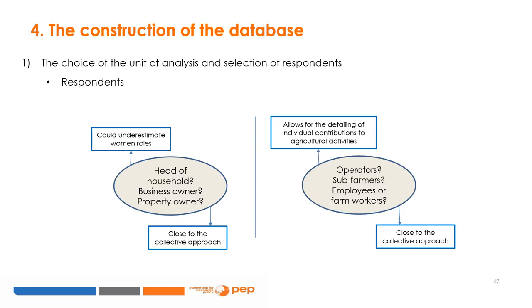For the selection of respondents, we have to choose between the head of the household, the business owner, the property owner, the operators, the sub-farmers, or the employees and farm workers. If the head of the household is selected, such a choice could underestimate women's roles and therefore remains close to the unitary approach. Choosing the operators, sub-farmers, employees, or farm workers as respondents is close to the collective approach and allows for detailing individual contributions to agricultural activities.